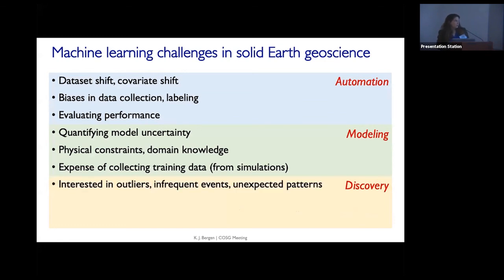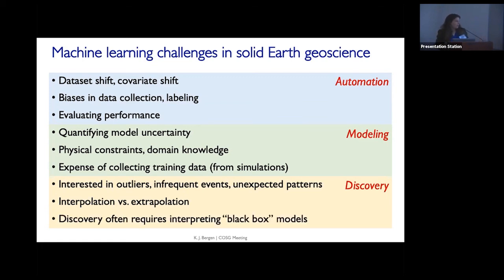With discovery there are some challenges. Because we're interested in outliers, infrequent events, or unexpected patterns, it can be hard because machine learning is really good at finding common patterns and overall trends, but it can be difficult to find unusual cases. Machine learning algorithms are really good at interpolating between data but not as good at extrapolating, and discovery means looking outside of what you already know. Another challenge is that often discovery requires not just a model that makes a prediction, but understanding why — what did it learn in order to do that. These models can be difficult to interpret, and that's an area that still needs a lot of work.